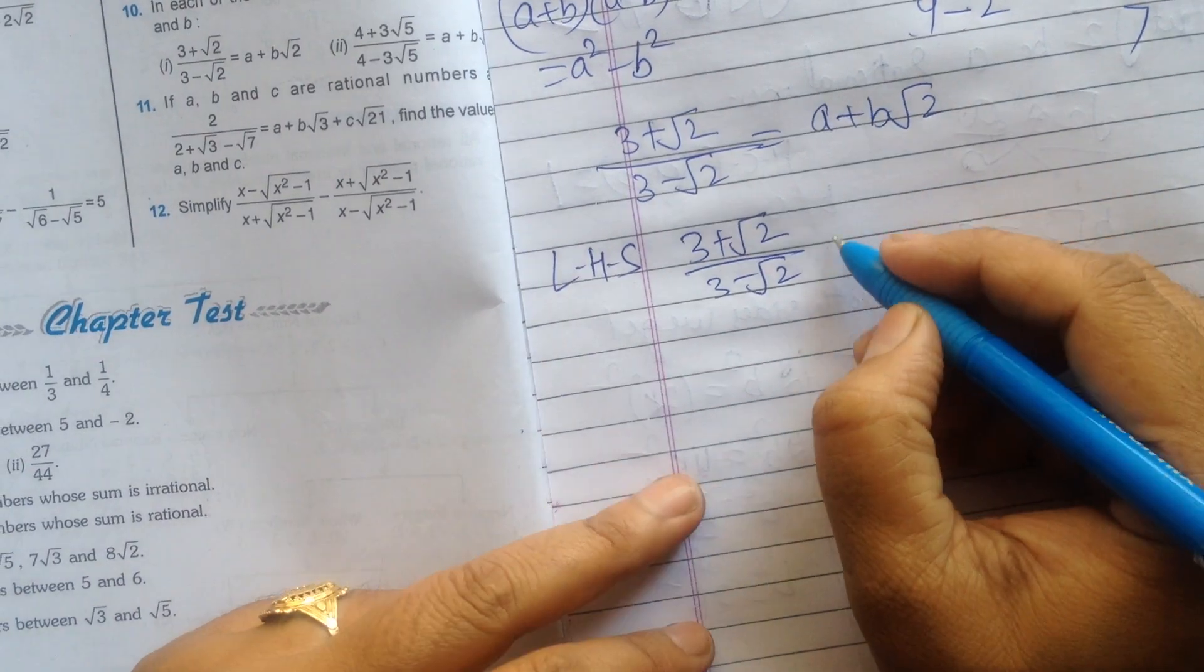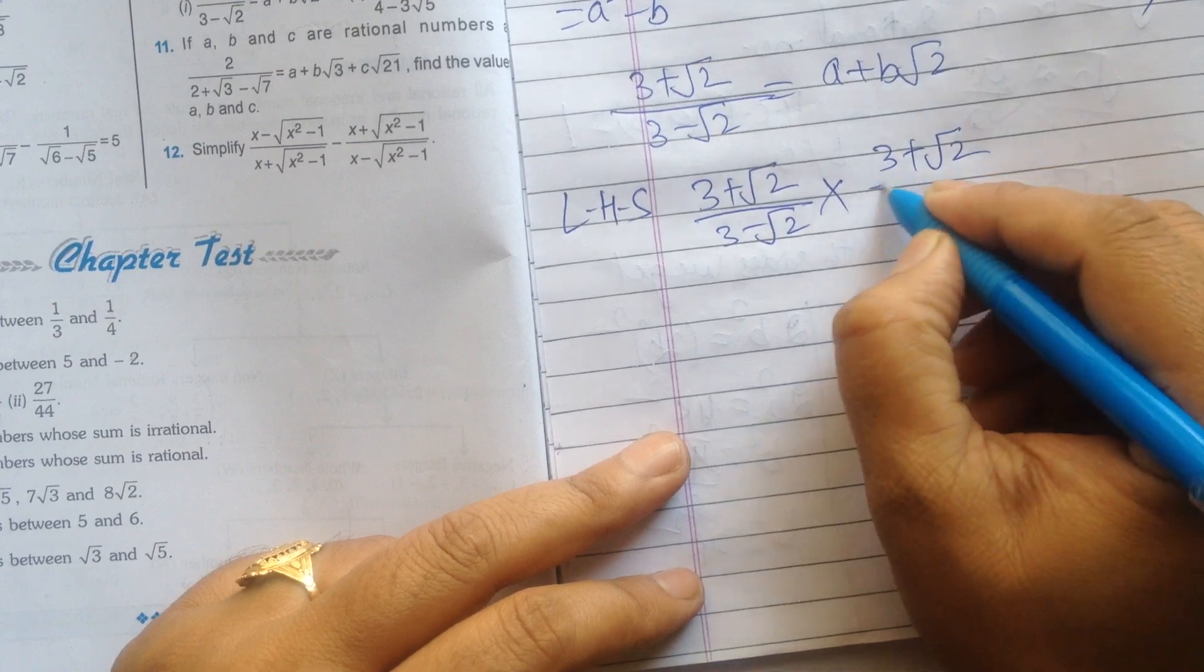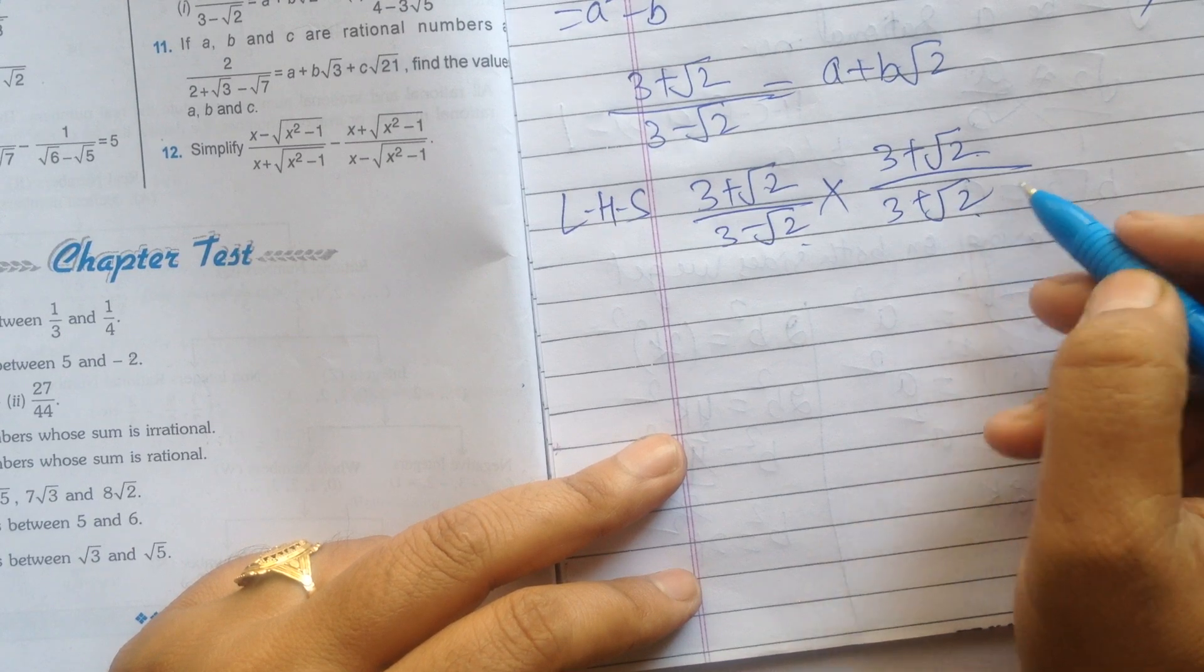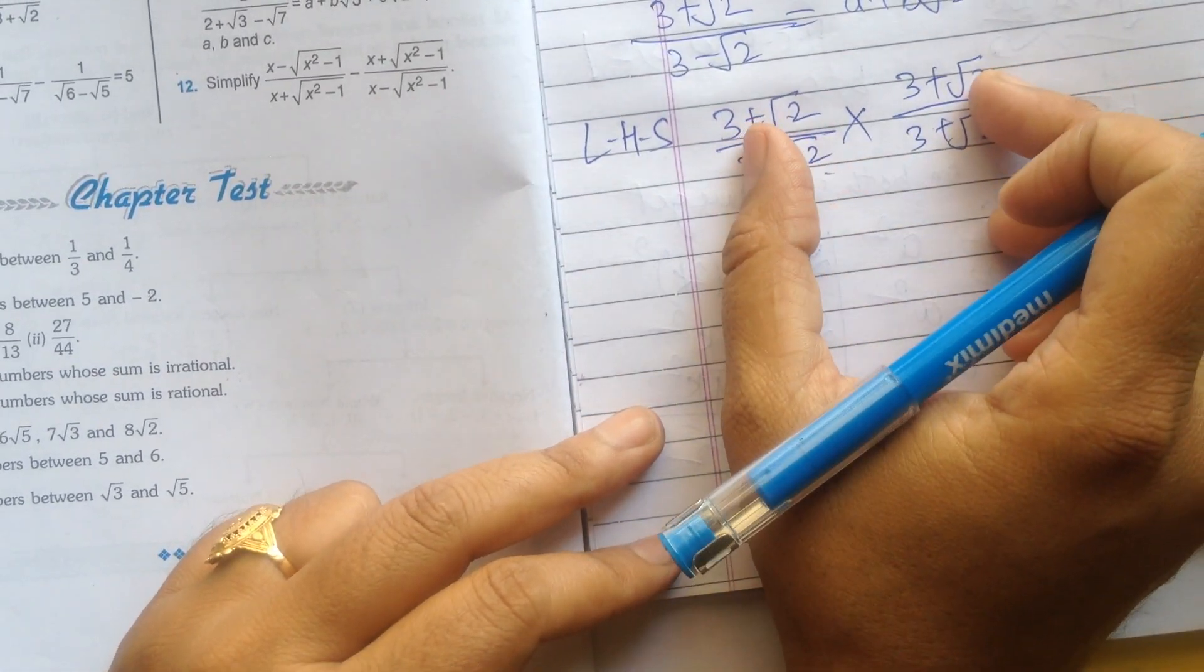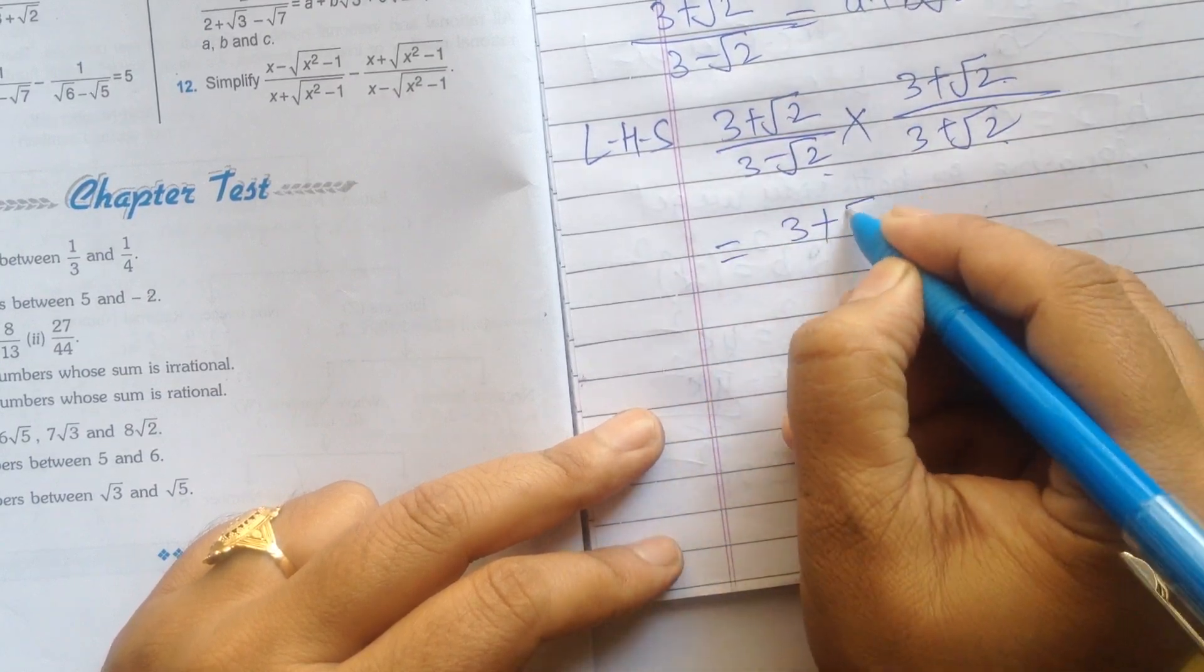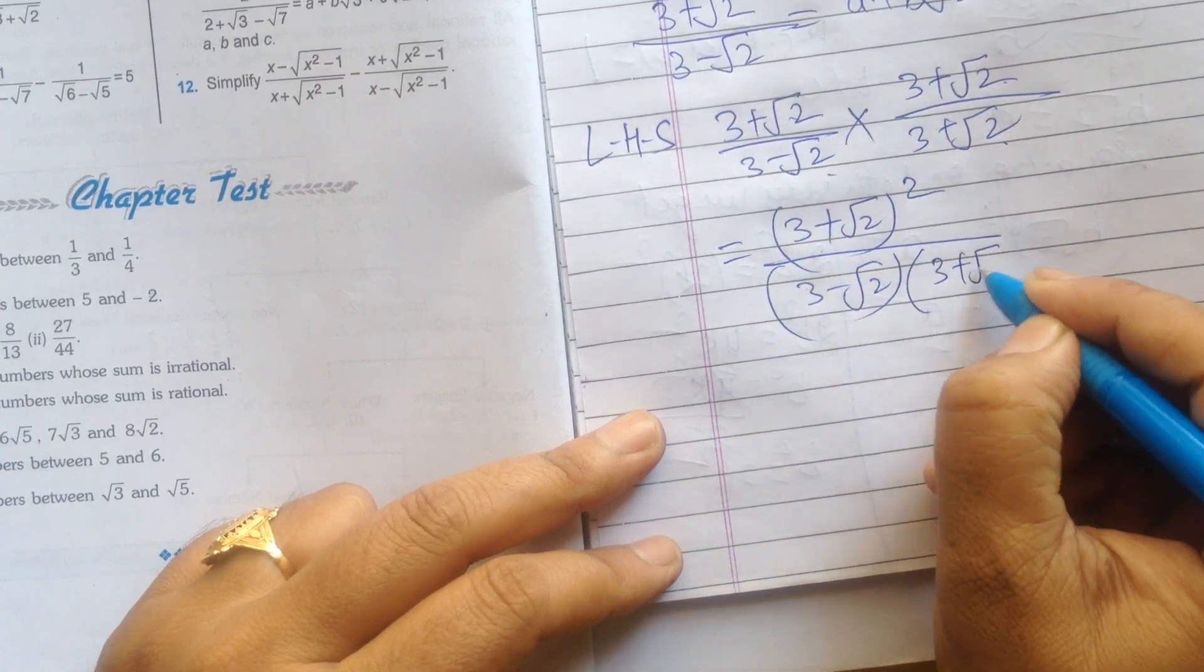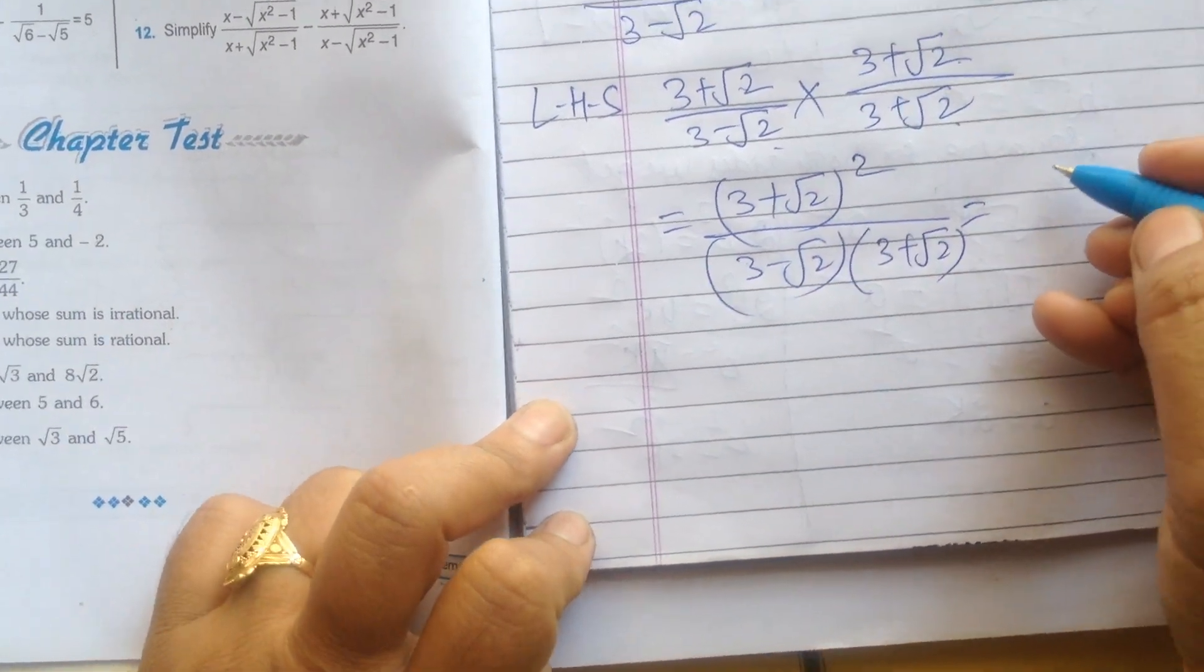We have taken the left hand side, that is 3 plus square root 2 upon 3 minus square root 2. So we will take the conjugate of the denominator, that is 3 plus square root 2. Now numerator with numerator, denominator with denominator. We will see carefully, this term occurs two times. Both terms are the same. Then we can write 3 plus square root 2 whole squared. In the denominator the same formula applies.